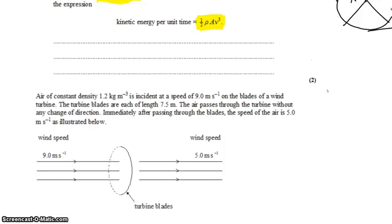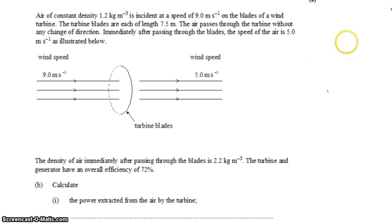In the next part, we're asked to use that formula that we just derived in a scenario. We have air with a constant density is incident at a speed of 9 m/s on the blades of a wind turbine. The turbines are each length 7.5 meters. And the air passing through the turbine doesn't change direction. Immediately after getting through the blades, the speed of the air changes. It's now 5 m/s, so it slows down. We've extracted kinetic energy from it. And after passing through the blades, the density reduces to a new value.